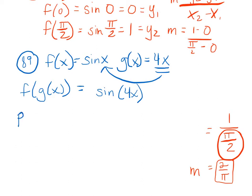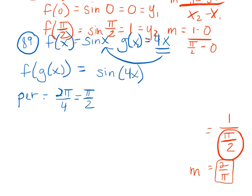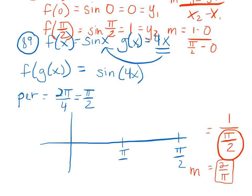Now we have to graph sine(4x) using our new material. The period is 2pi/4, which is pi/2. Starting on the axis, since the period is pi/2, I cut it in half to get quarters, then into eighths: 1/8, 2/8, 3/8. Since sine curves start at (0, 0) and everything is perfectly symmetrical, the amplitude is 1 because there's just a 1 in front.